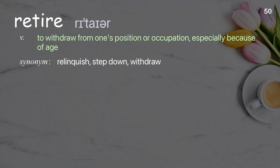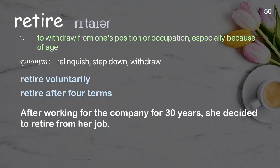Retire: to withdraw from one's position or occupation, especially because of age. Examples: retire voluntarily, retire after four terms. After working for the company for 30 years, she decided to retire from her job.